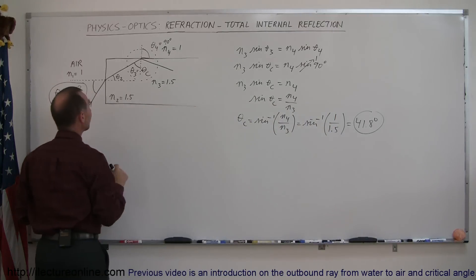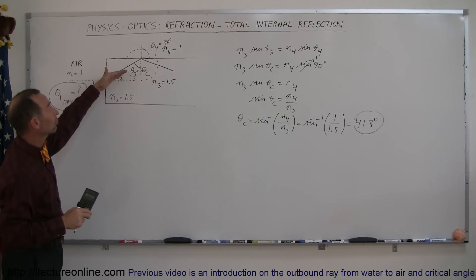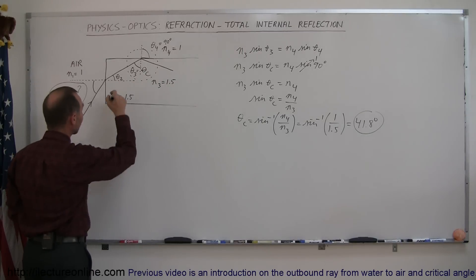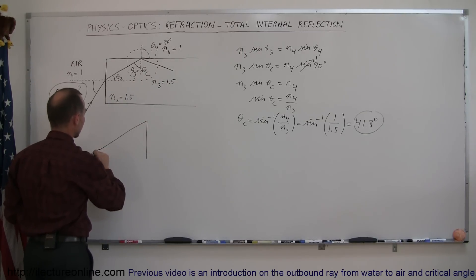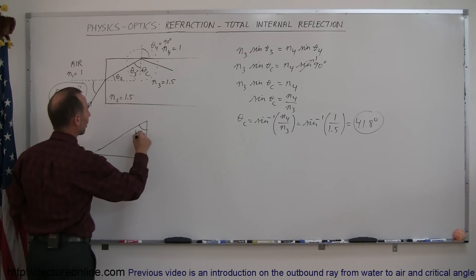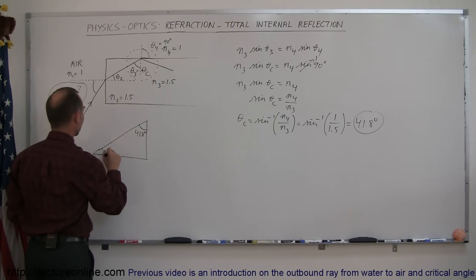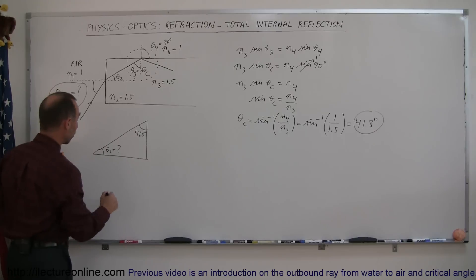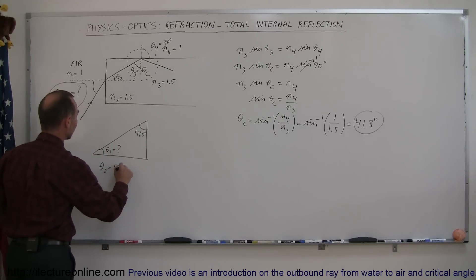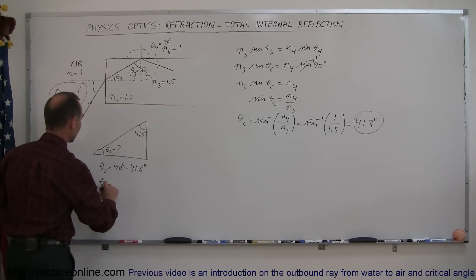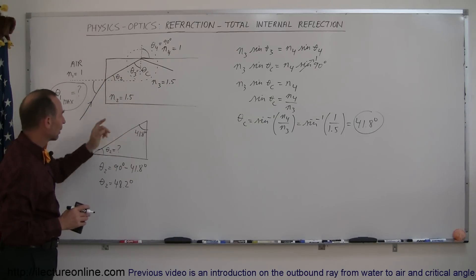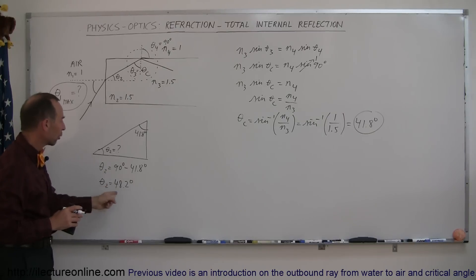The critical angle must be at least 41.8 degrees, meaning theta sub 3 should be at least 41.8 degrees. Now, if theta sub 3 is 41.8 degrees, what should theta sub 2 be? Taking that triangle: theta sub 3 is 41.8 degrees, and theta sub 2 is the complementary angle in the triangle. Since those two angles must add up to 90 degrees, theta sub 2 equals 90 degrees minus 41.8 degrees, which is 48.2 degrees. Since theta sub 3 must be greater than or equal to 41.8 degrees, theta sub 2 must be less than or equal to 48.2 degrees.